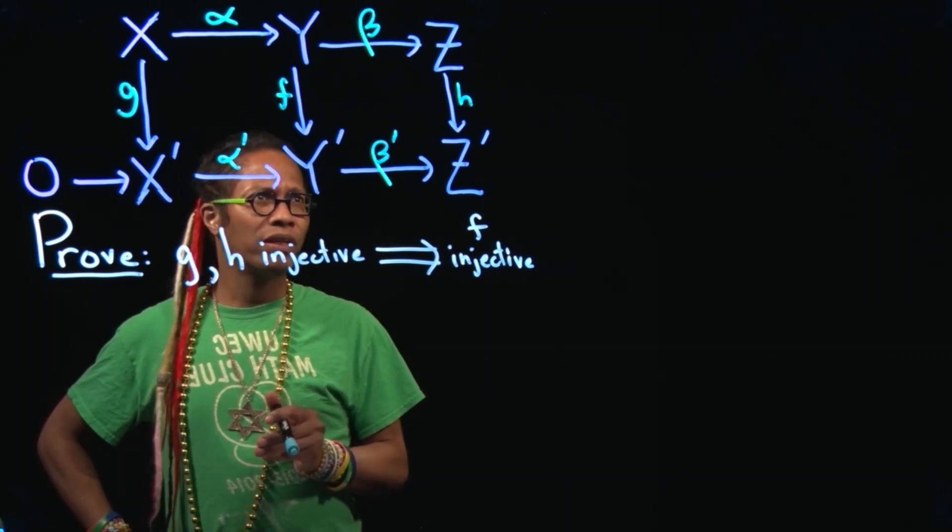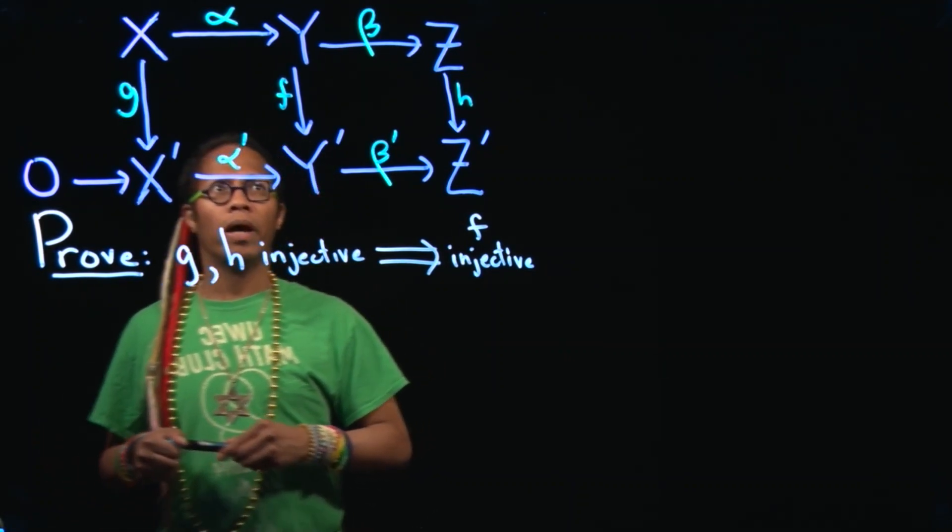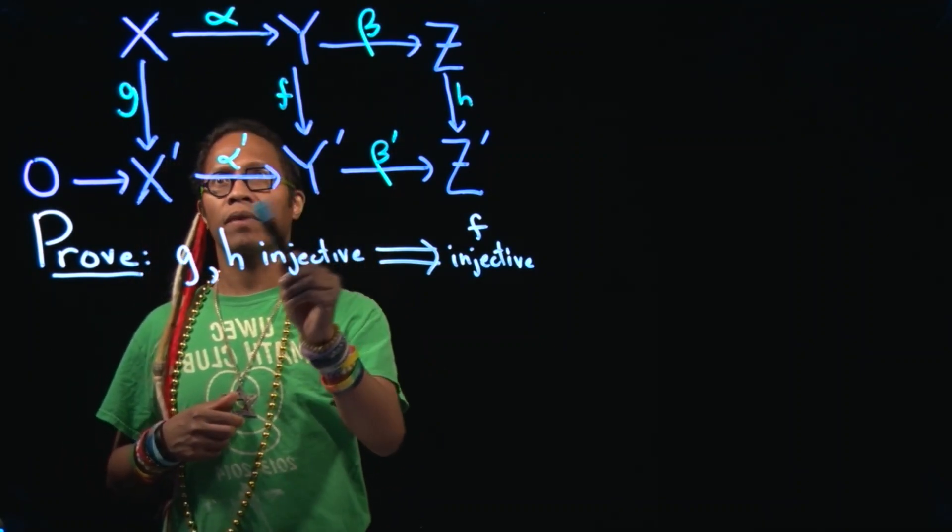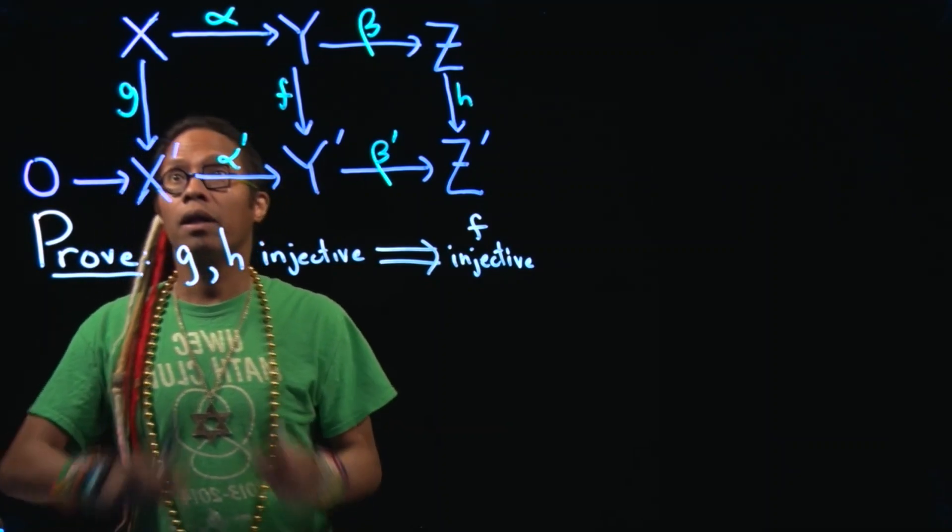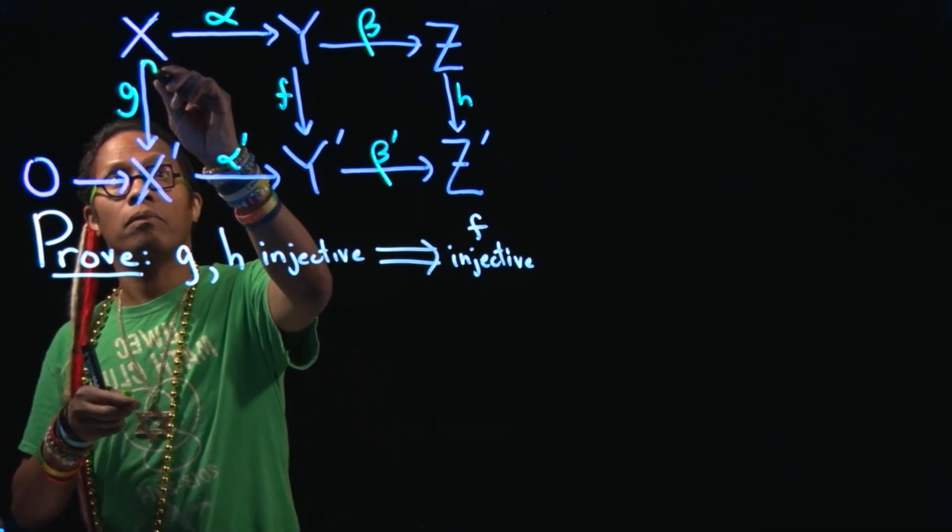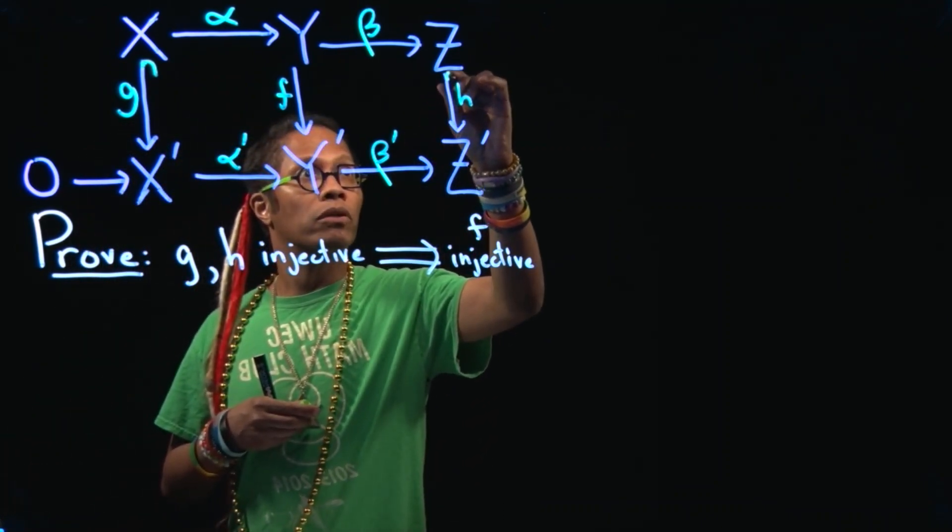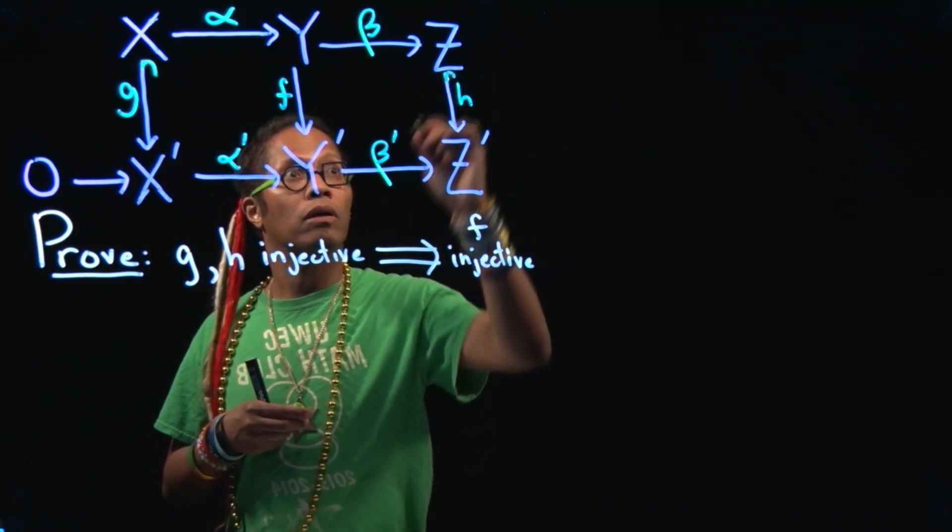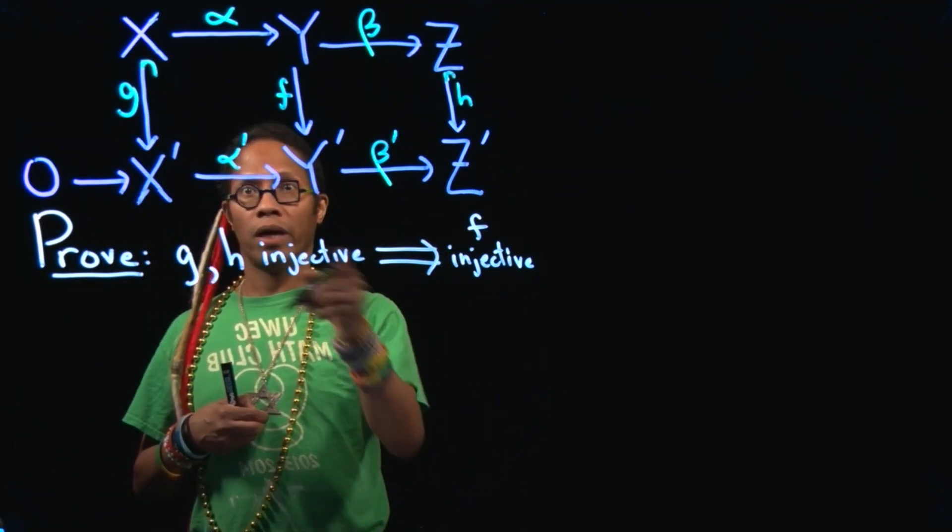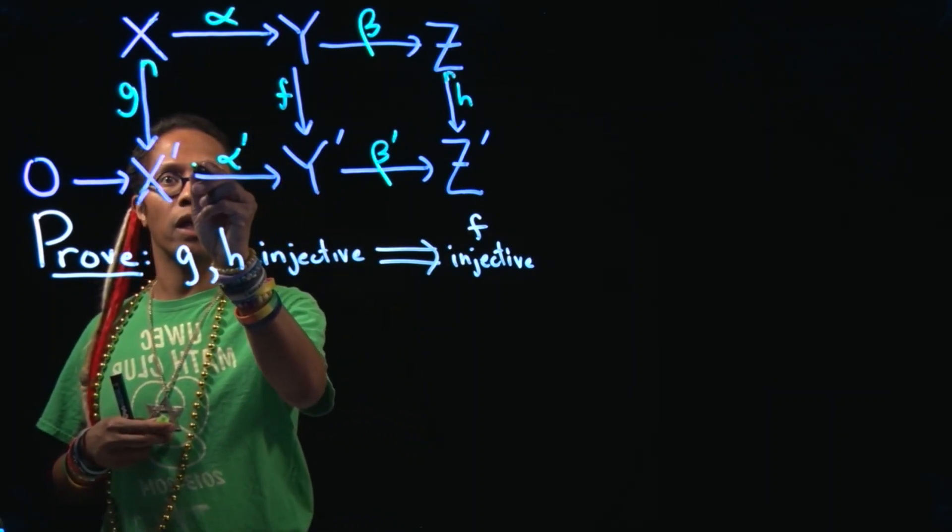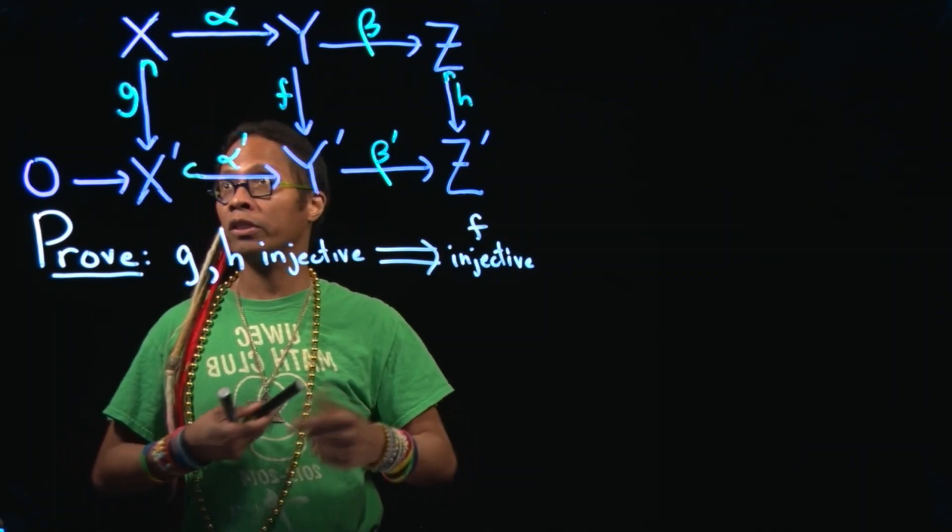I want to prove half of the short five lemma. So in this version we have exact rows and we have G is injective. So actually I can put a little hook here and we also know H is injective. Put a little hook here and we want to show that F is injective. So since we have exact rows we know for instance that alpha prime here is injective. By the way these are all our modules where R is just a commutative ring.